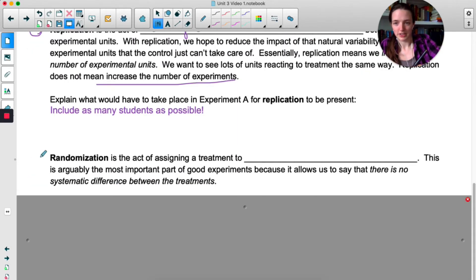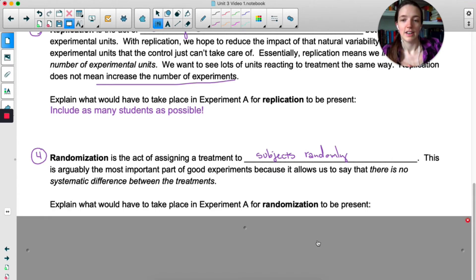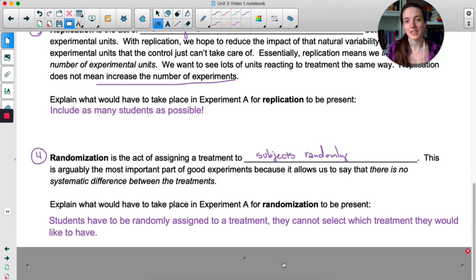The last principle of experimental design is randomization. This is the act of assigning a treatment to subjects randomly. This is arguably the most important because it allows us to say that there is no systematic difference between the treatments. Now for Experiment A, in order to have randomization present we would have to randomly assign each student to one of the three treatments. They cannot select which treatment they would prefer.